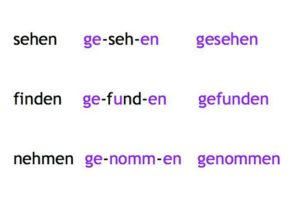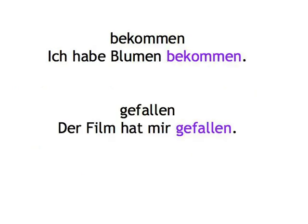Irregular inseparable prefix verbs like bekommen or gefallen are easy — they don't change at all, because they already have a prefix fused to the stem and as irregular verbs retain the -en ending. Bekommen → Ich habe Blumen bekommen. Gefallen → Der Film hat mir gefallen.